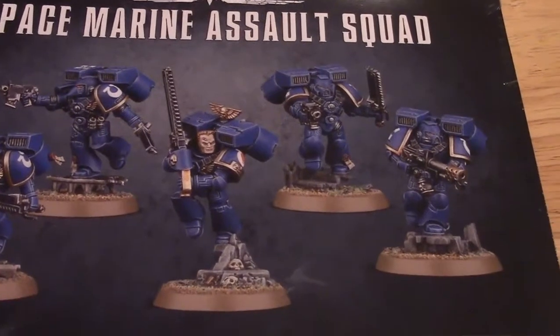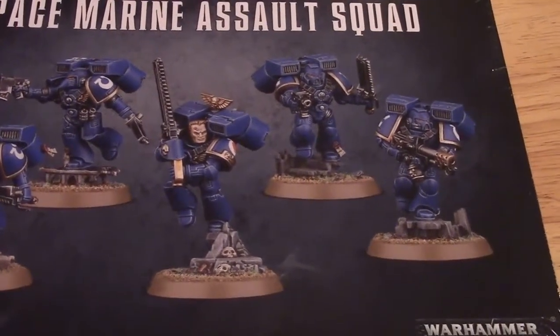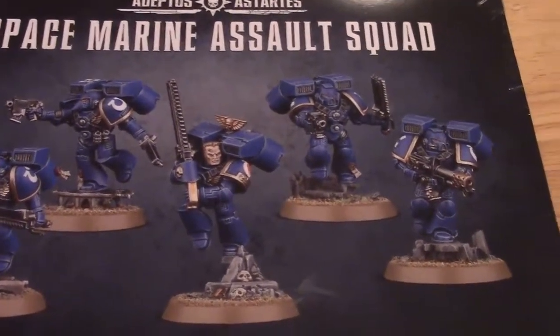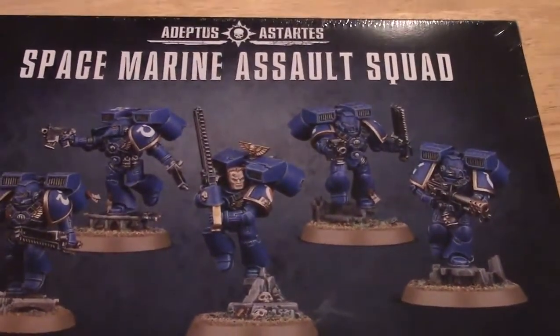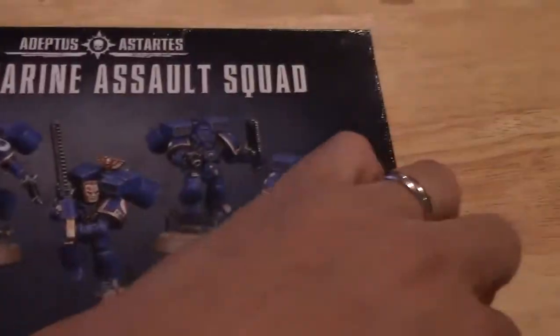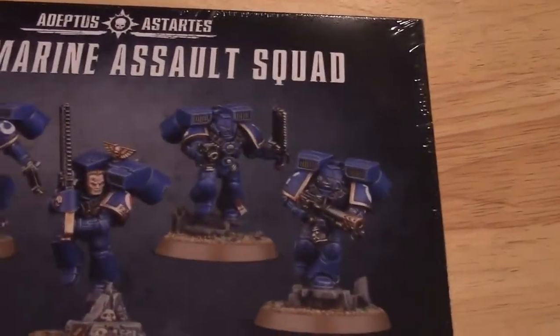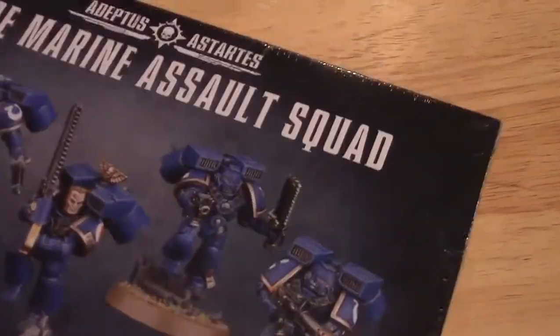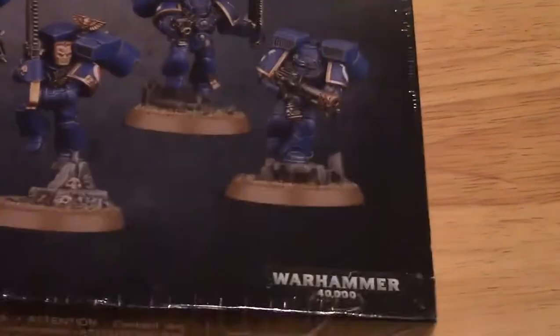I need these and a few other things to make myself a Battle Demi Company from the new Codex. I definitely needed these guys for the Battle Demi Company. I got some Space Marine Assault Squads. It says at the top now, Adeptus Astartes. I'll cut the wrap. The puppies are outside but everybody left to go to the store, so I've got time to do this.